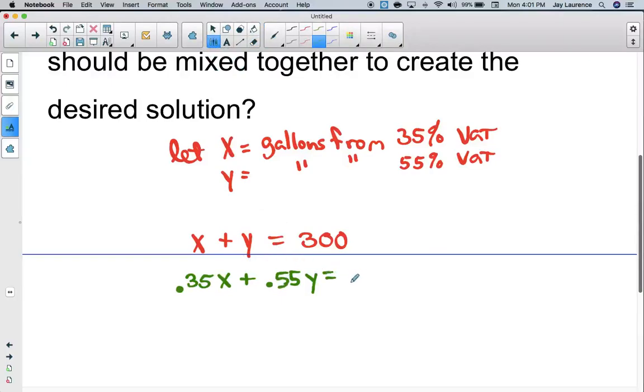Now I have to be consistent. I did percent of acid times number of gallons. The desired amount is 42%, and the desired number of gallons is 300. So 0.35X + 0.55Y = 0.42(300). I'm going to use my calculator. That's going to be the same as 126.